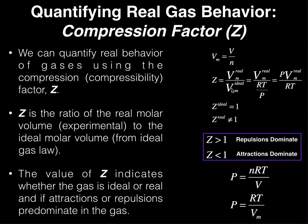In the denominator, the ideal molar volume is what you calculate from the ideal gas equation. The ideal gas equation P = nRT/V, rearranged into molar quantities, gives P = RT over the molar volume. Solving for molar volume gives RT over P. Because pressure appears in the denominator of the denominator, the compression factor Z is ultimately equal to the pressure times the real molar volume divided by RT.